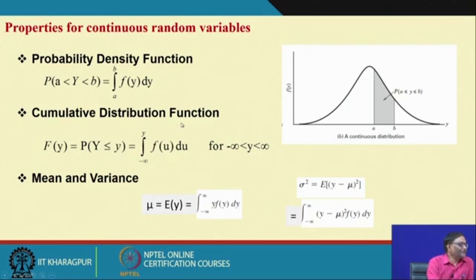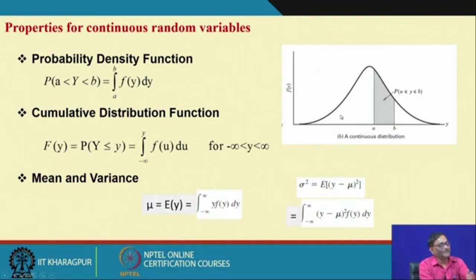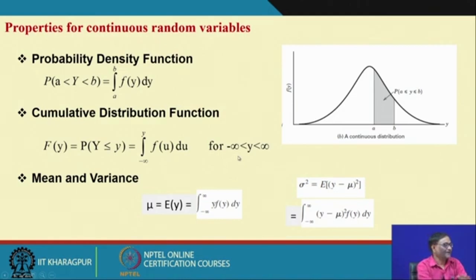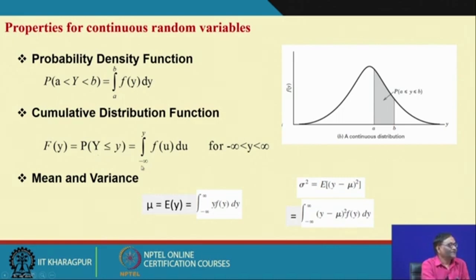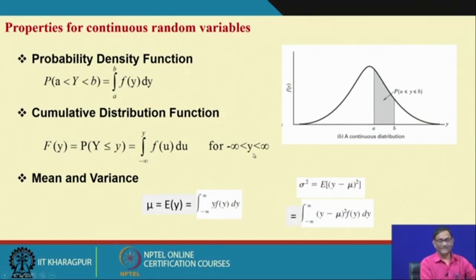The cumulative distribution function (CDF) gives the probability that y is less than or equal to some value a — it is the area under the curve to the left of a. The CDF is written as F(y) = P(Y ≤ y) = integral from −∞ to y of f(u) du, where y ranges from −∞ to +∞. Both continuous and discrete distributions have a CDF.